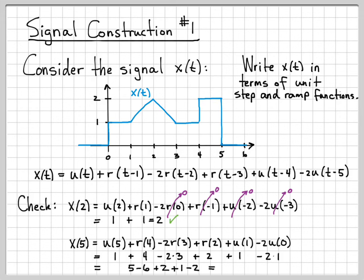If we simplify this a little bit, this turns into 5 minus 6 plus 2 plus 1 minus 2, which is equal to zero, which is exactly what we have in our figure. This doesn't check every single point in the plot, but when you're done, it's nice to check a few points to make sure you don't have any noticeable errors in your equation for the signal.